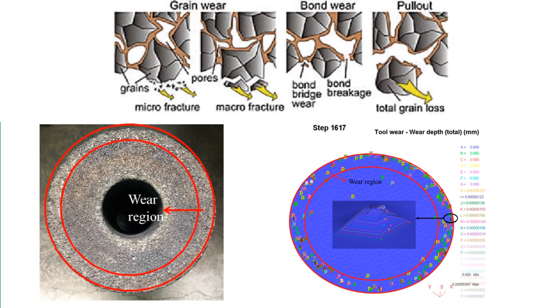Grain fracture happens when a portion of the grain breaks off, but the rest of the grain remains bonded in the wheel. Thus, the edges of the fractured area become new cutting edges, and the tendency for grain fracture is called friability.